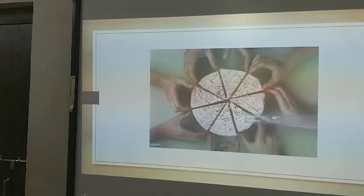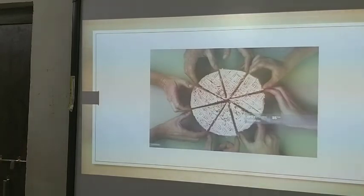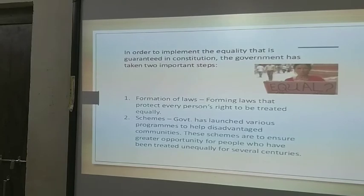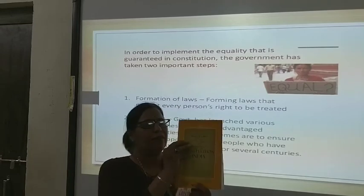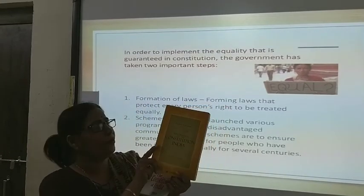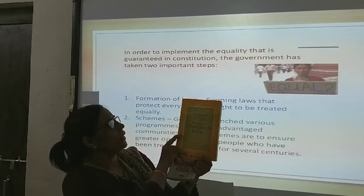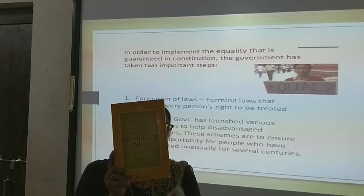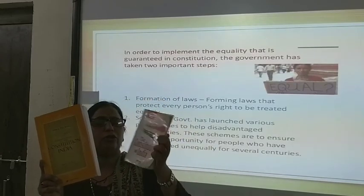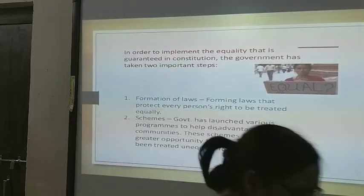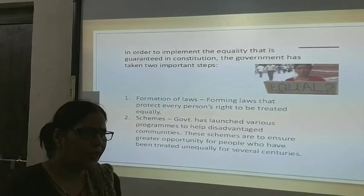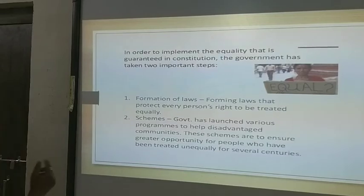Now, next is our constitution. Equality — this is a picture of equality showing all should be equal. In order to implement equality, the government has taken some steps. The government has formative laws that protect every person's right to be treated equally. I would like to show you the constitution book — it is in our library. Sometimes take this book and read it. This is the constitution of India, and there is also a congregation book in our library you can read.